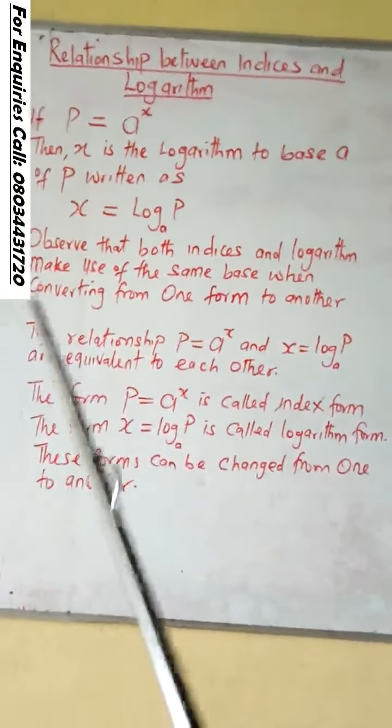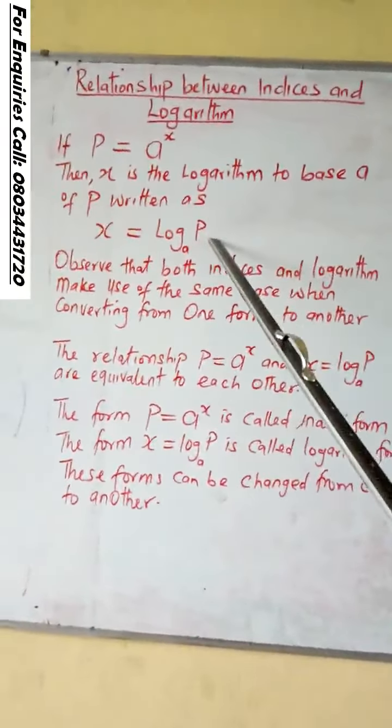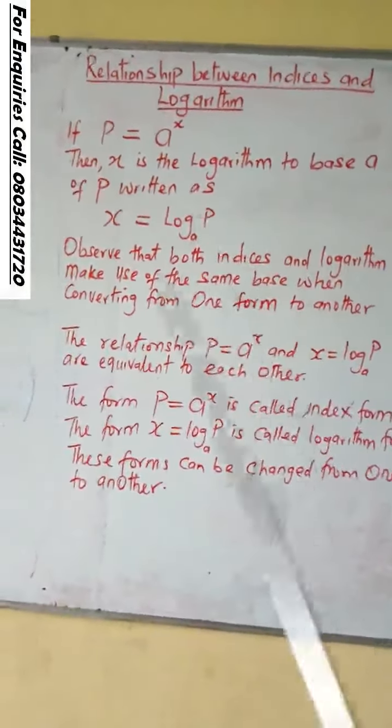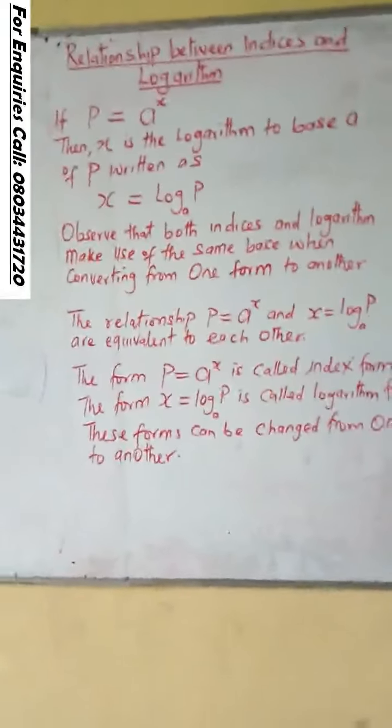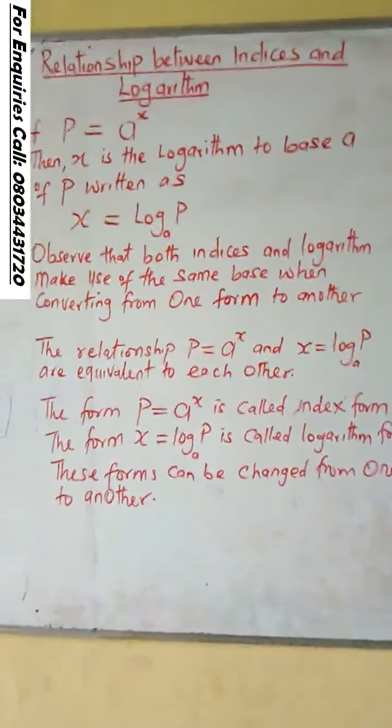So you observe that both indices and the logarithm form make use of the same base when converting them from one form to another.